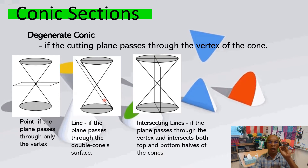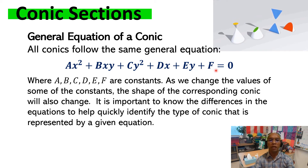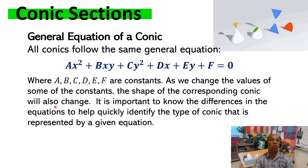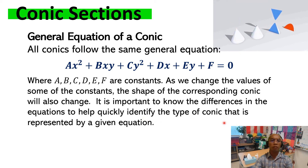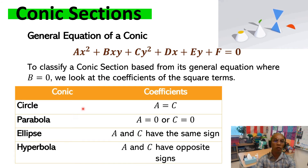The degenerate conics are: a point, a line, and two intersecting lines. All conics follow the same general equation: Ax² + Bxy + Cy² + Dx + Ey + F = 0, where A, B, C, D, E, and F are all real number constants. As we change the values of these constants, the corresponding conic section also changes. It is important to know the differences in the equations to quickly identify the type of conic represented, even without graphing. We consider B equal to zero, and we focus on the coefficients of the squared terms — A is the coefficient of x² and C is the coefficient of y².